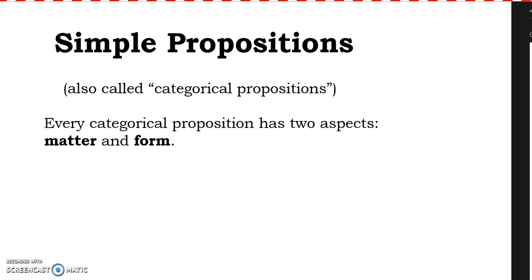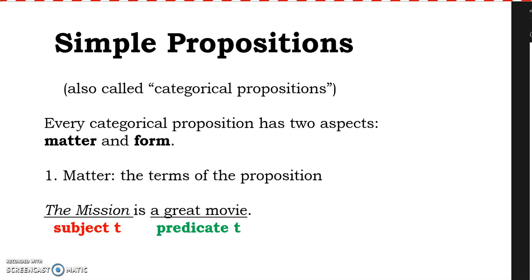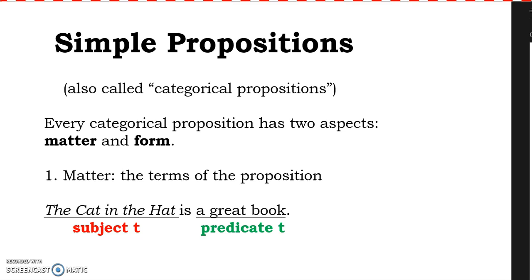Simple propositions are also sometimes called categorical propositions. With every categorical proposition — every simple proposition — there are two aspects: the matter and the form. The matter of a proposition is the terms of the proposition. So 'The Mission is a great movie' has a subject term and a predicate term. Similarly, 'The Cat in the Hat is a great book' — the subject term is 'The Cat in the Hat' and the predicate term is 'great book.' In both cases, you have two terms being joined by an 'is.'